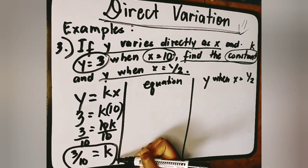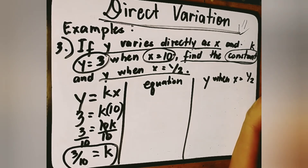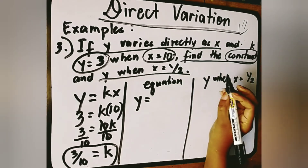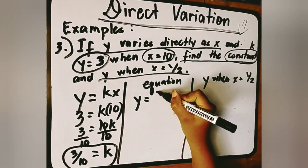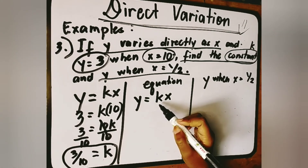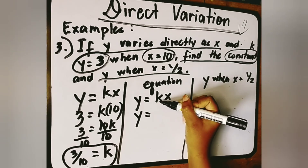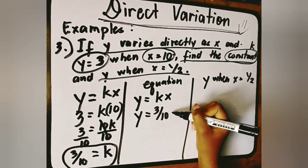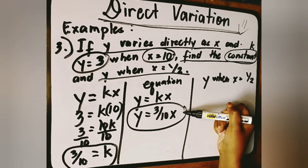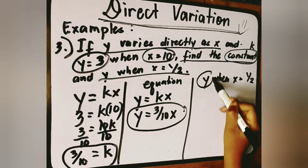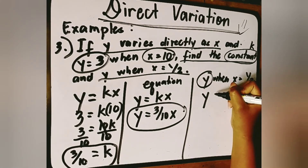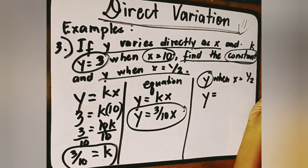So 3 over 10 is our constant, the value of k. Since we have k, we can find the equation of variation. The general formula is y is equal to k times x. Since k is 3 over 10, we substitute to get the equation of variation: y is equal to (3/10)x. Now we can find the value of y.